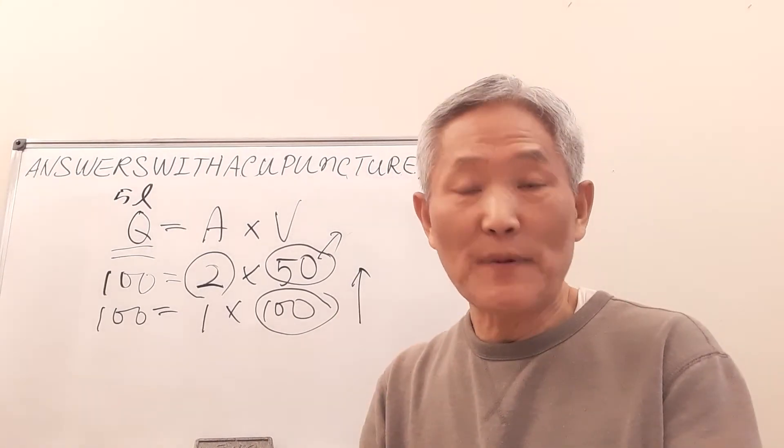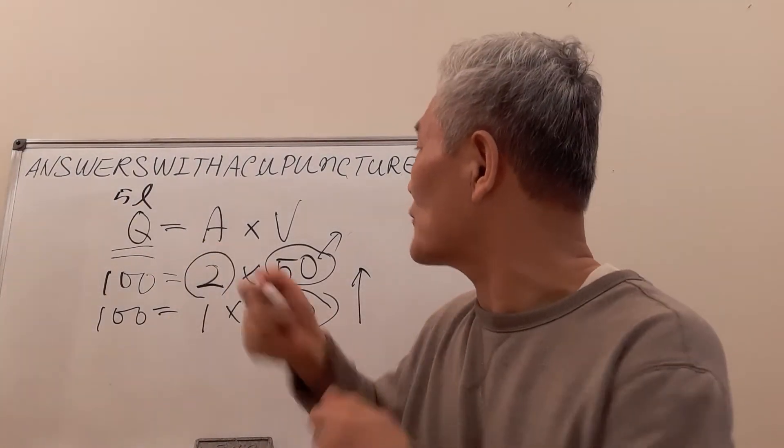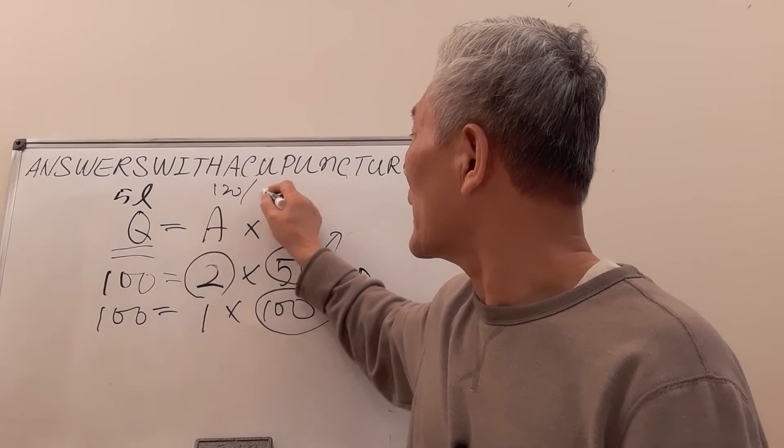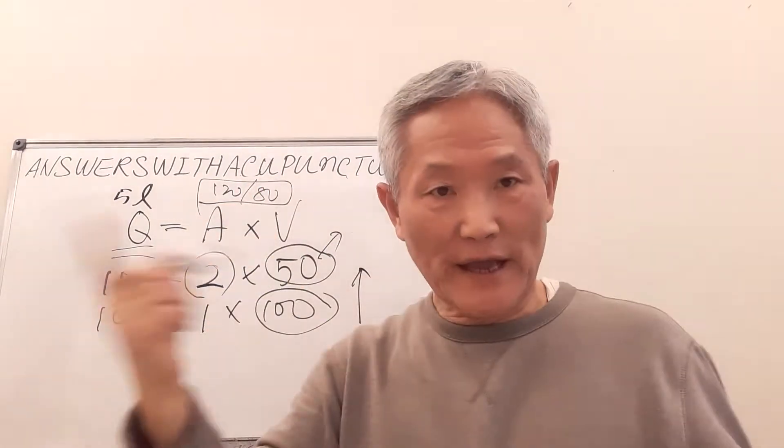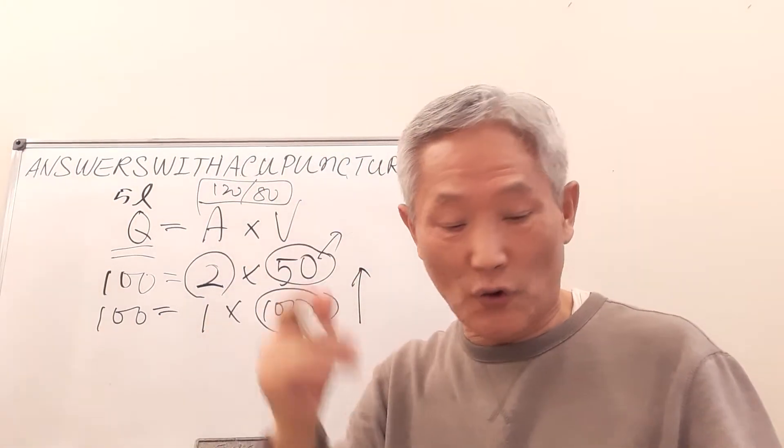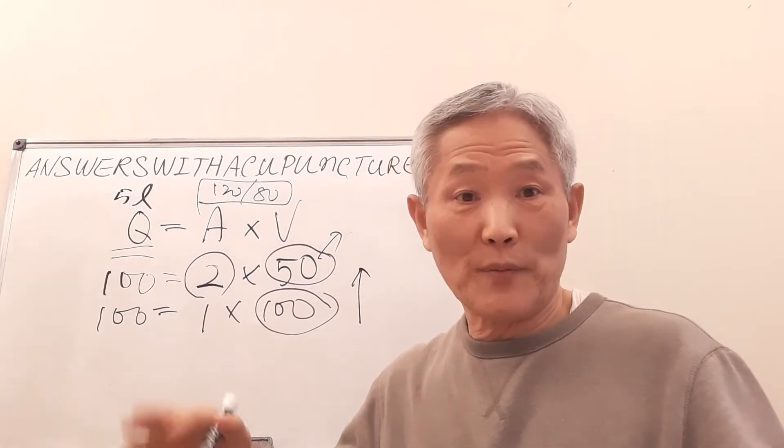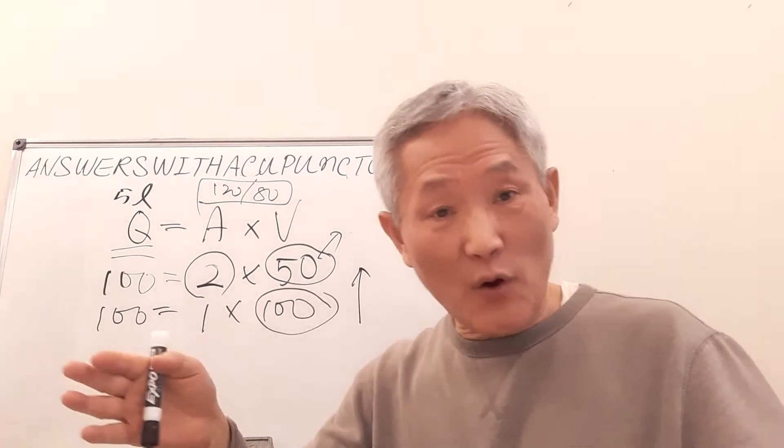They believe blood pressure 120 over 80, over that is dangerous because of stroke. However, let me go one by one.